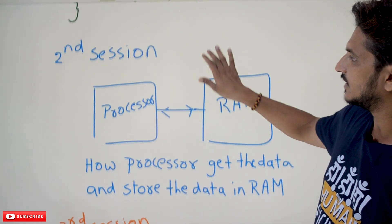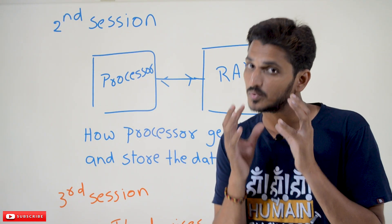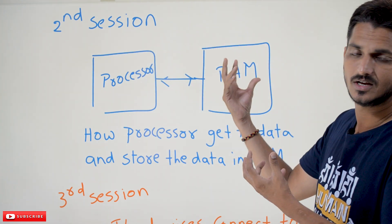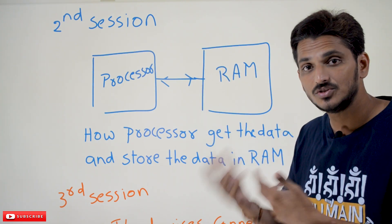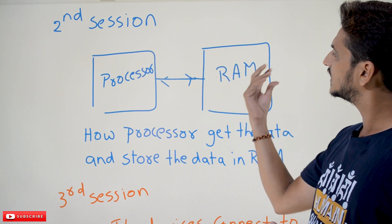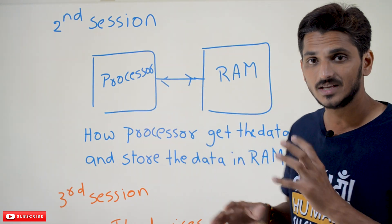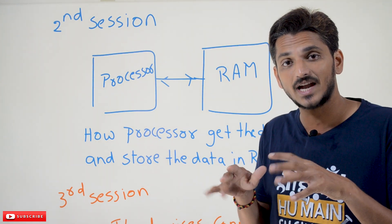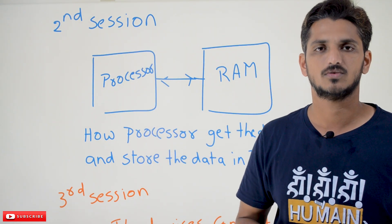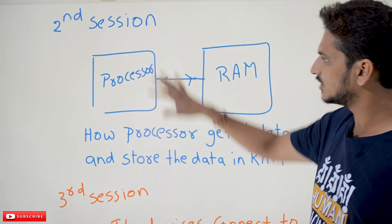In the first session we designed a simple processor. Now in the second session — how this processor connects to random access memory and cache memory, how it shifts and retrieves data from RAM — all these hardware-level details you are going to understand in the second session of the computer architecture course.